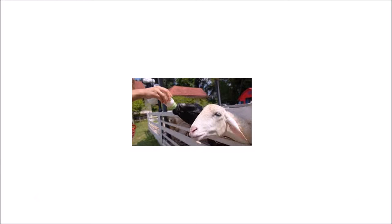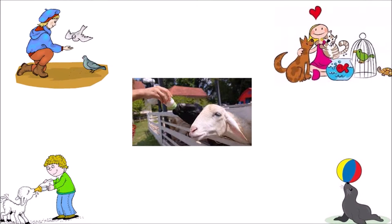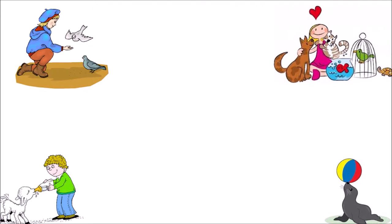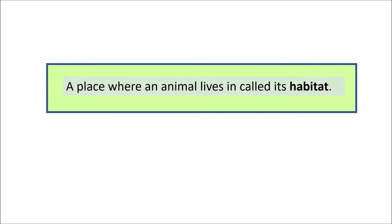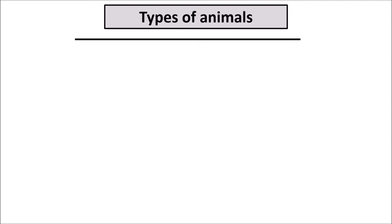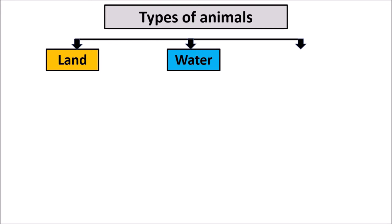To know more about animals, we should not only read about them, but also love them and take care of them. So let's start and discover how they can be categorized. A place where an animal lives is called its habitat. Let us now learn how animals are grouped and categorized on the basis of their habitat. Animals can live on the land, water, and sky.